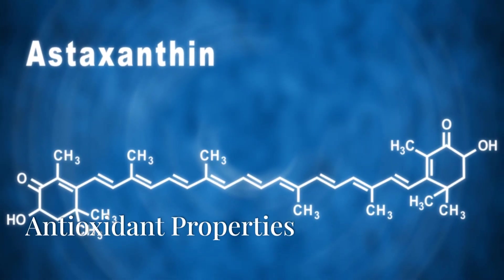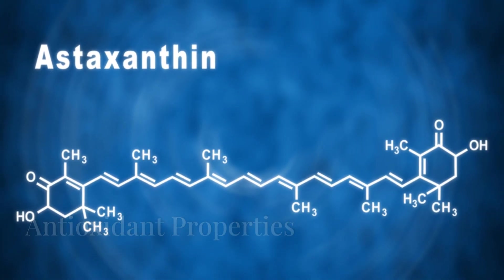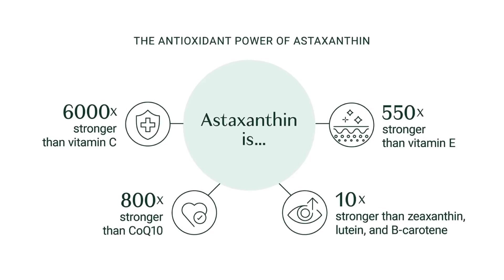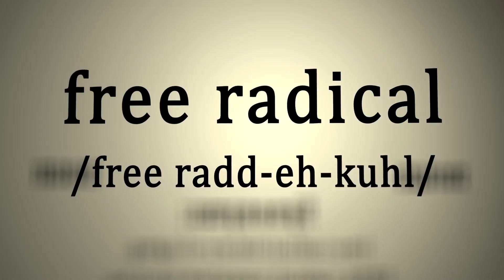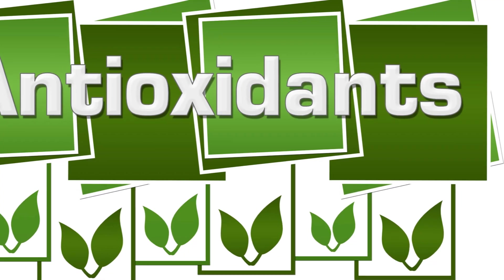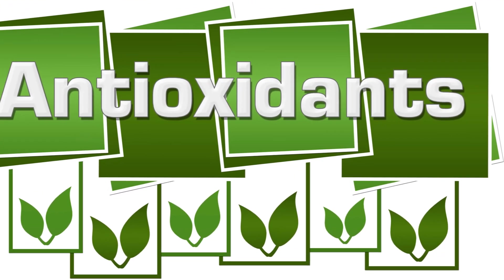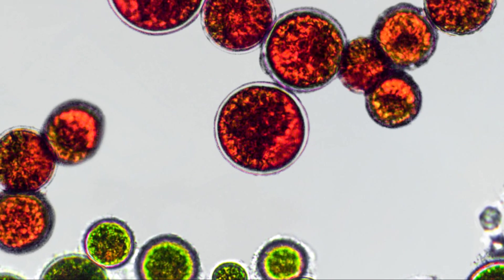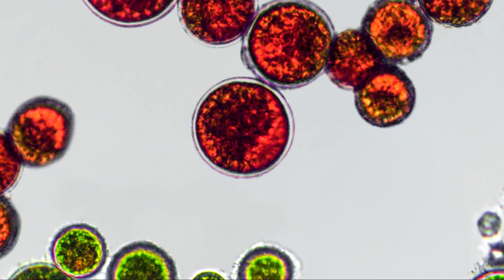Astaxanthin is celebrated for its exceptional antioxidant capacity, being up to 6,000 times stronger than vitamin C and 500 times stronger than vitamin E. This impressive ability to neutralize free radicals helps protect cells from oxidative stress and damage. Astaxanthin's unique molecular structure allows it to span cell membranes, offering robust protection to cells and tissues throughout the body.